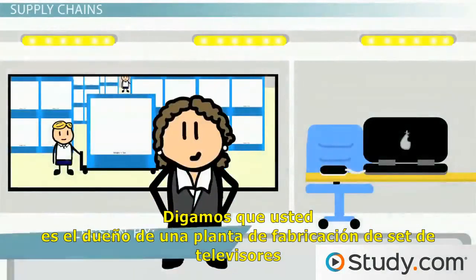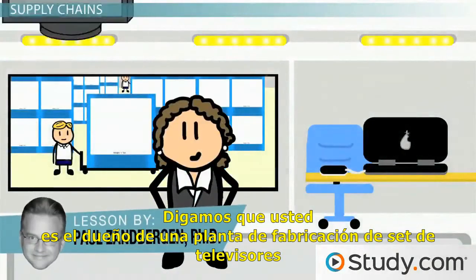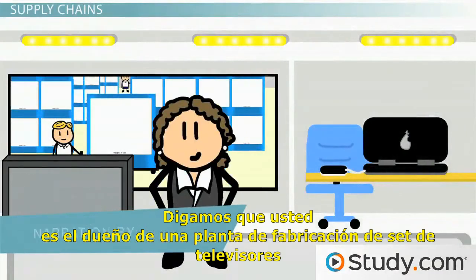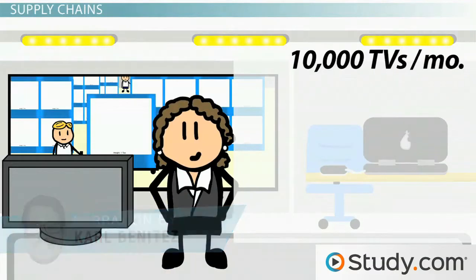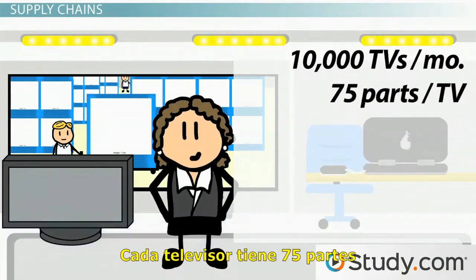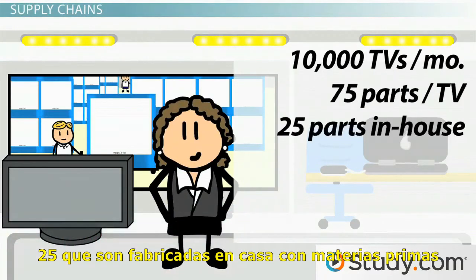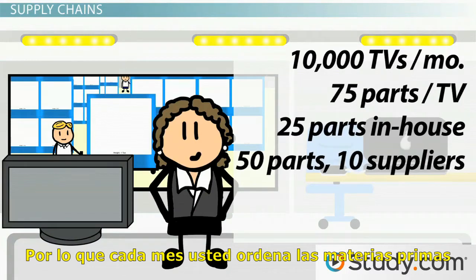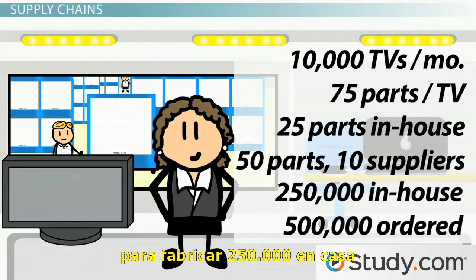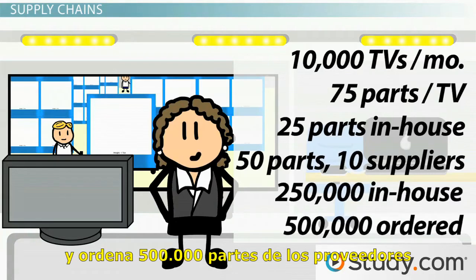Let's say you're the owner of a manufacturing plant that makes television sets. Your target is to produce 10,000 TVs every month. Every TV has 75 parts, 25 of which you build in-house from raw materials and 50 of which you order from 10 different suppliers. So every month you order the raw materials to make 250,000 parts in-house and you order 500,000 parts from suppliers.